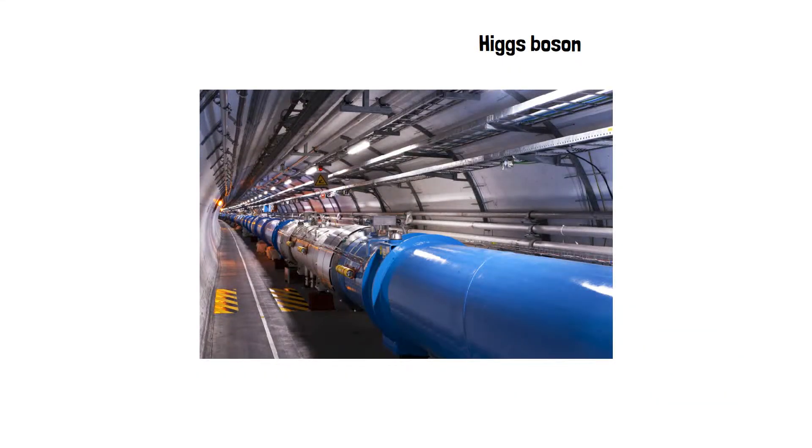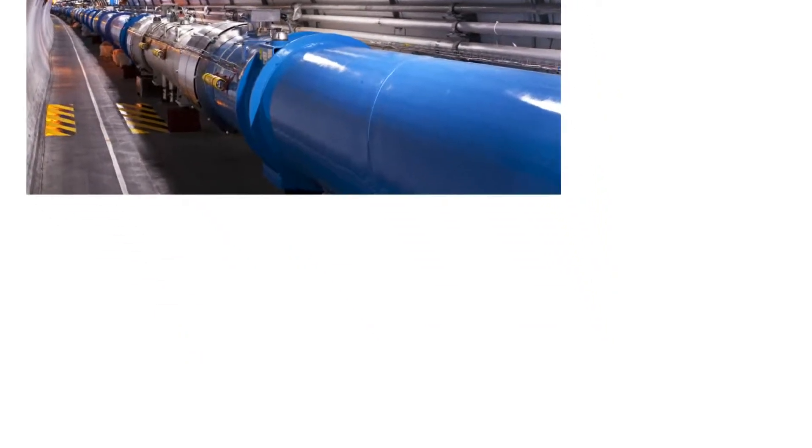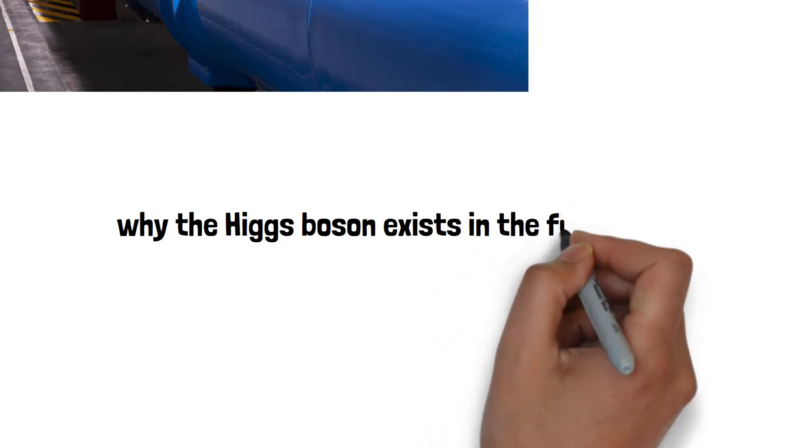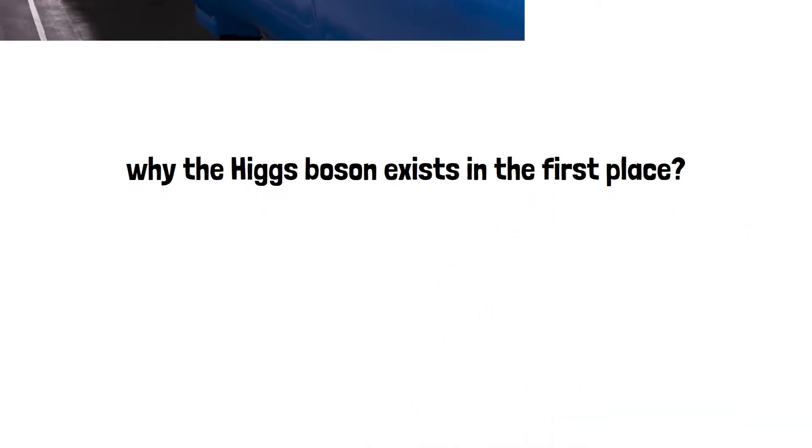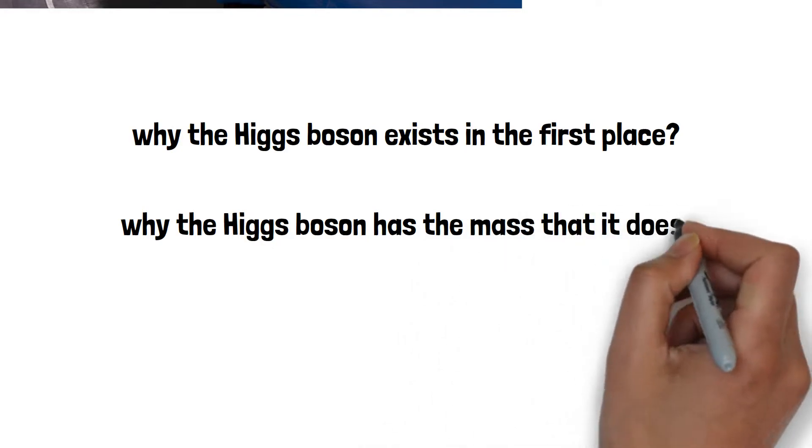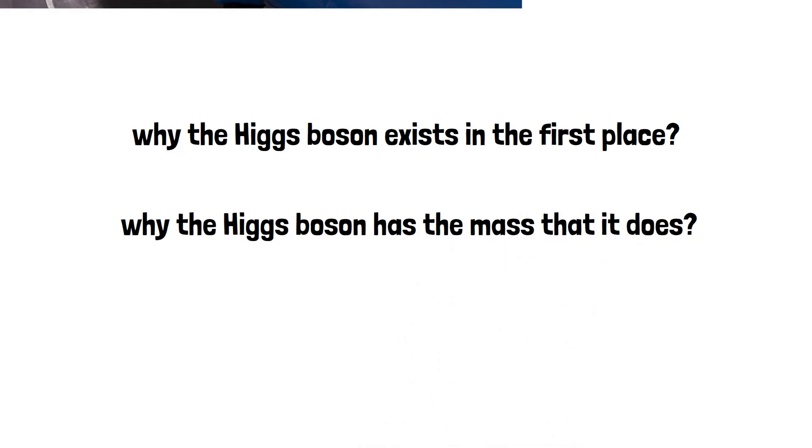But there's a catch. The Standard Model doesn't explain everything. It doesn't explain why the Higgs boson exists in the first place. It doesn't explain in detail why the Higgs boson has the mass that it does. The Higgs turned out to be a heck of a lot less massive than predicted.